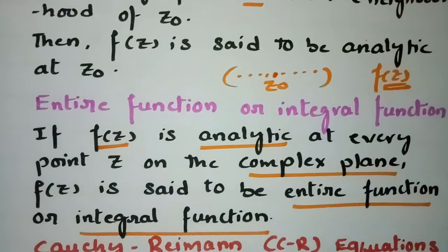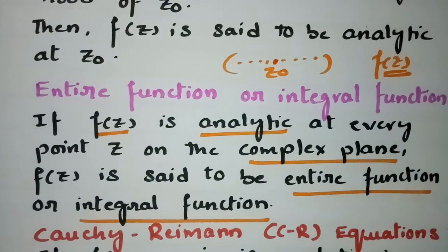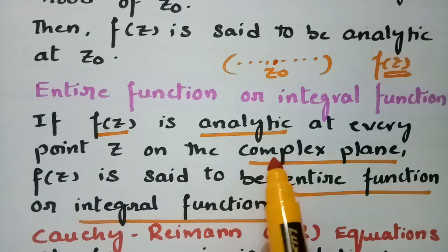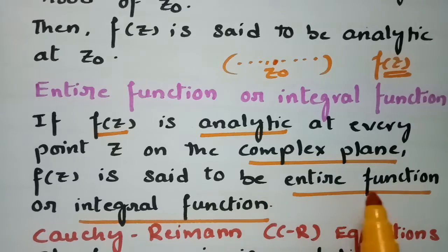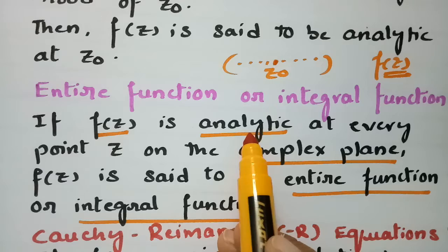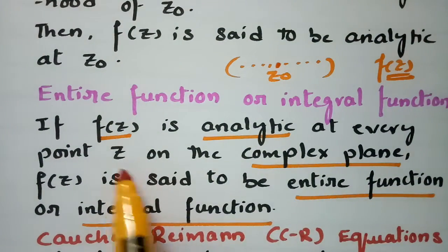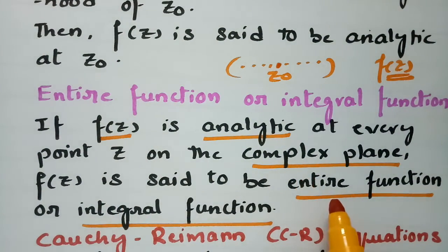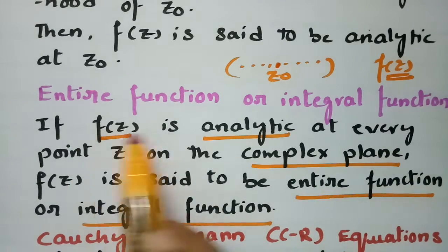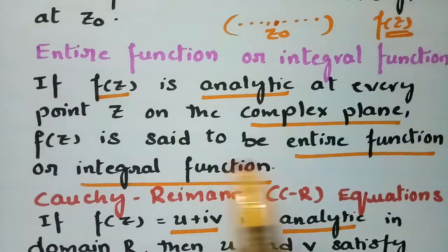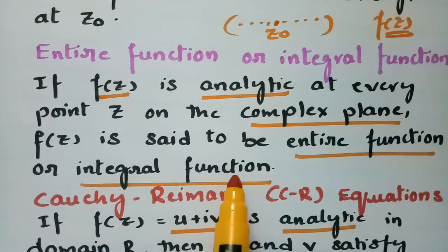Next, what is an entire function or integral function? If f(z) is analytic at every point z on the complex plane, then f(z) is said to be an entire function or integral function. Analytic means it should be derivable at each and every point on the plane.